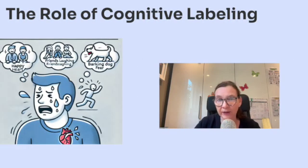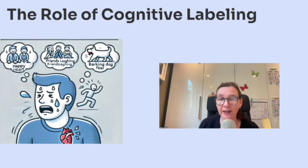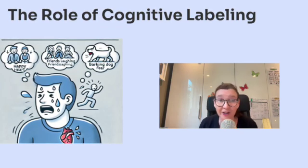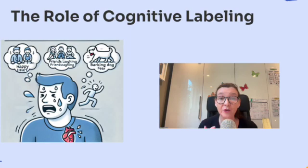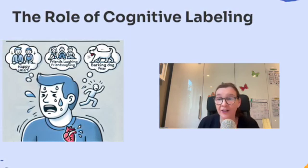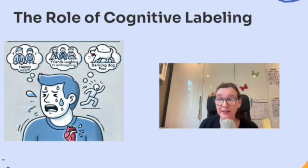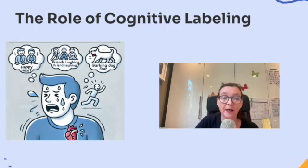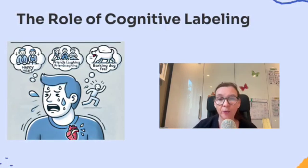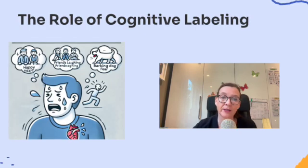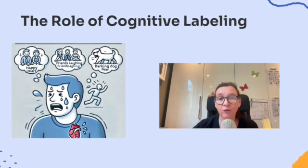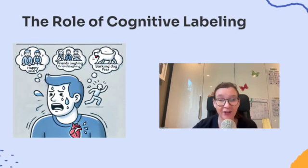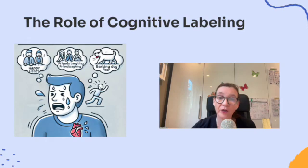Cognitive labeling is the process of interpreting or labeling your physiological response to understand what emotions you're feeling. In other words, your brain takes the signals from your body and decides — am I scared, am I excited, am I nervous? This is called cognitive appraisal. For example, imagine your heart's racing on a roller coaster — you label the feeling as excitement because the context is fun and thrilling. But in a dark alley, you label the same racing heart as fear because the context feels dangerous. The physical reaction is the same, but how you interpret it changes everything.